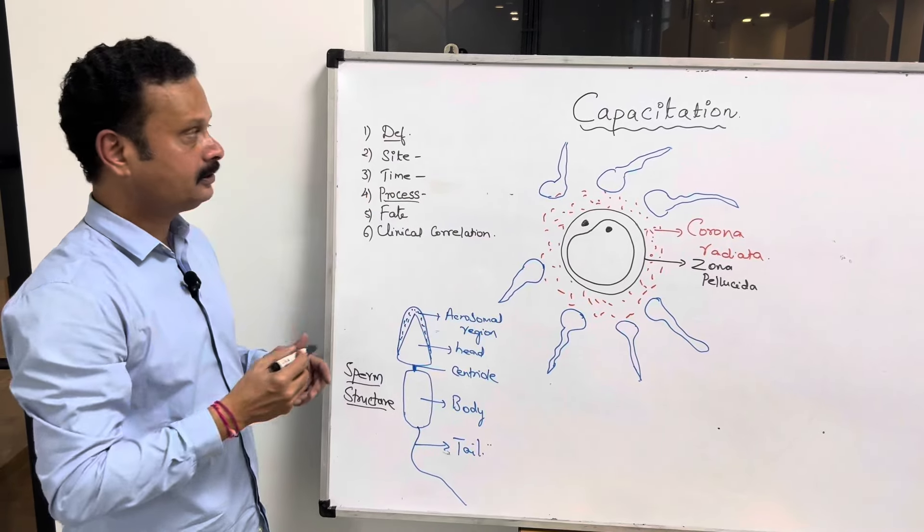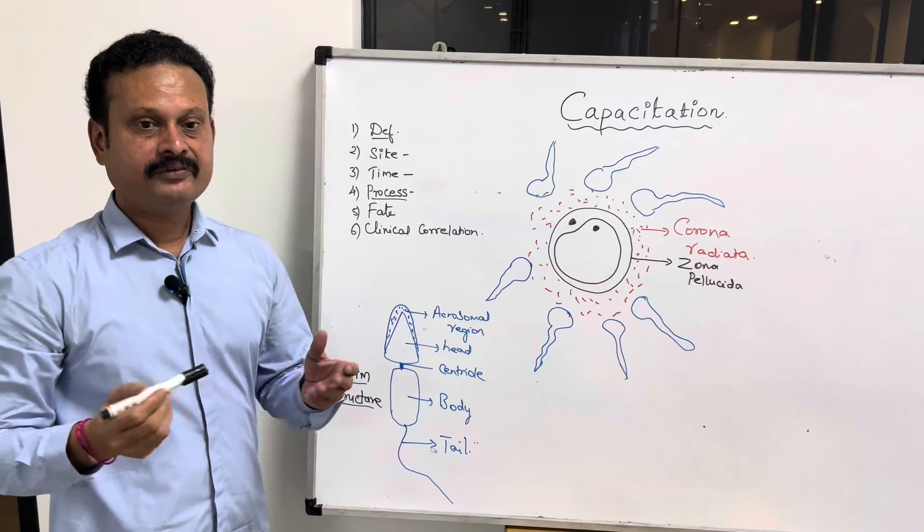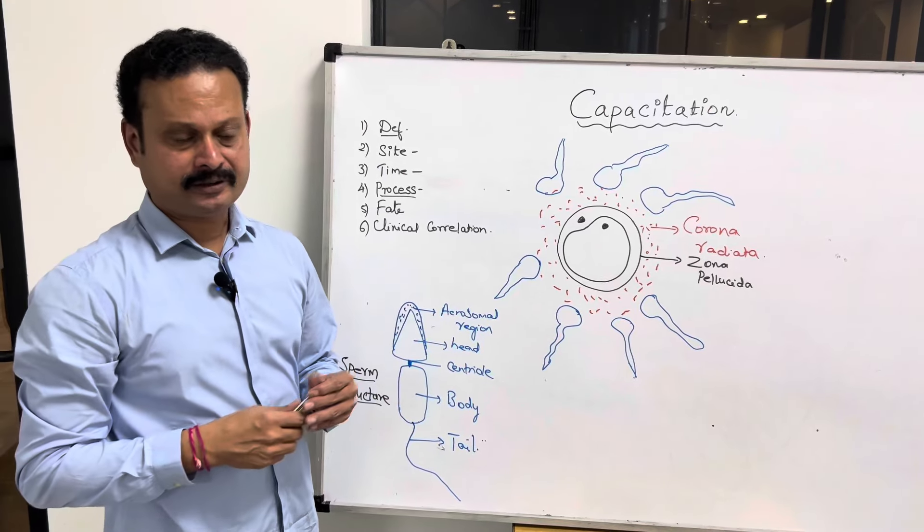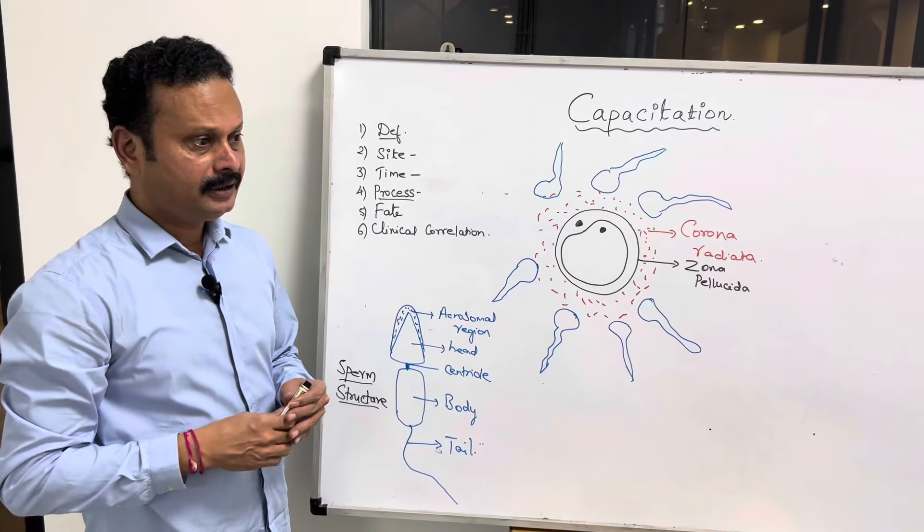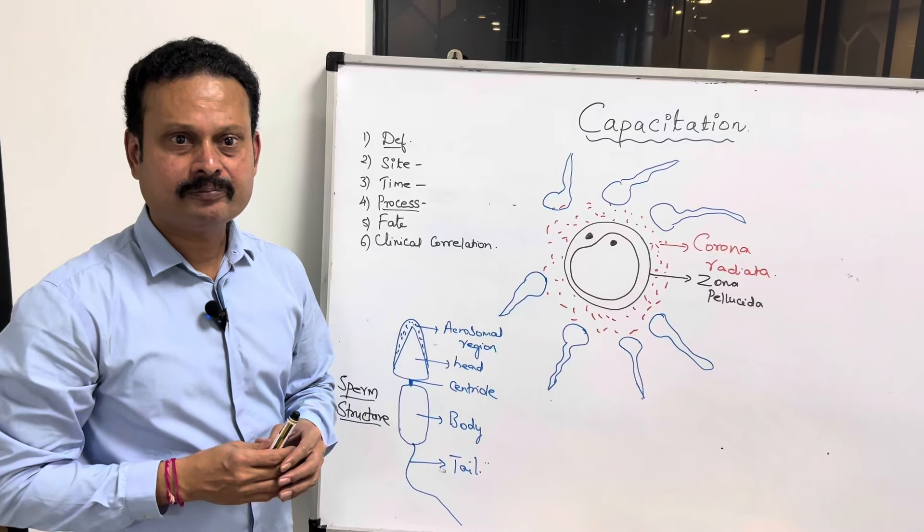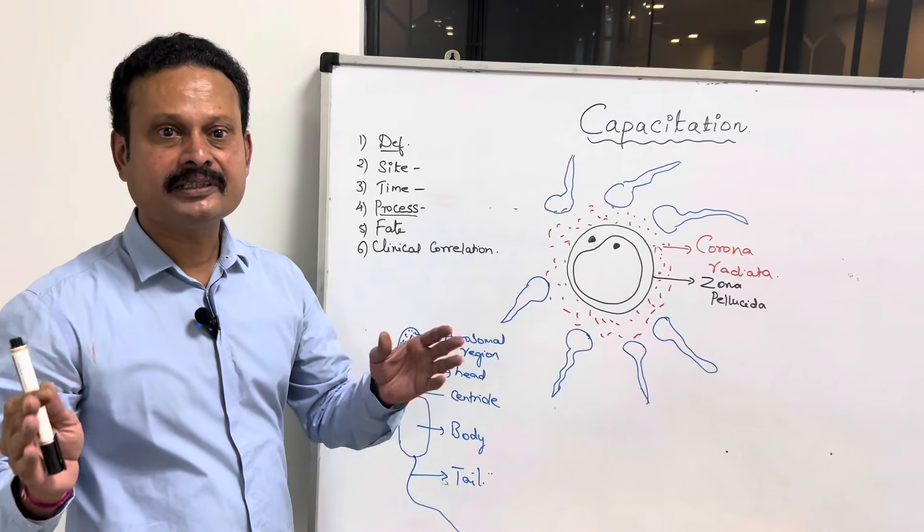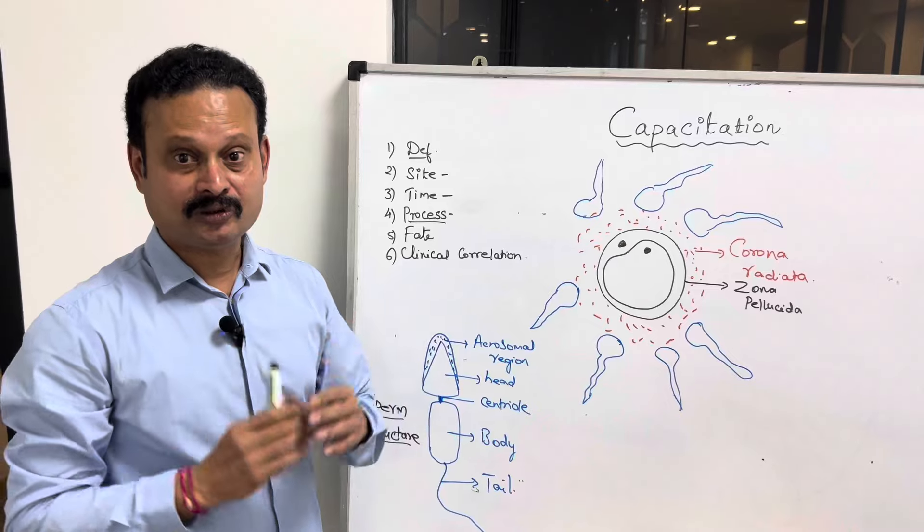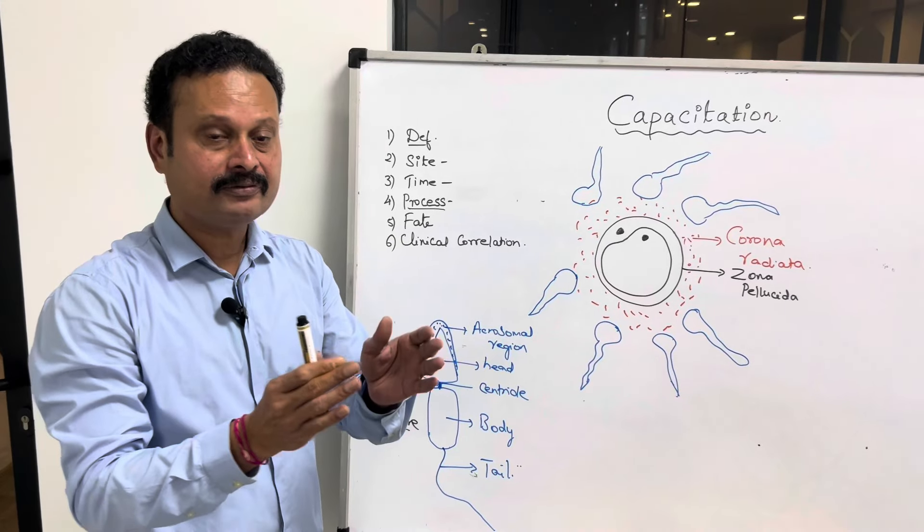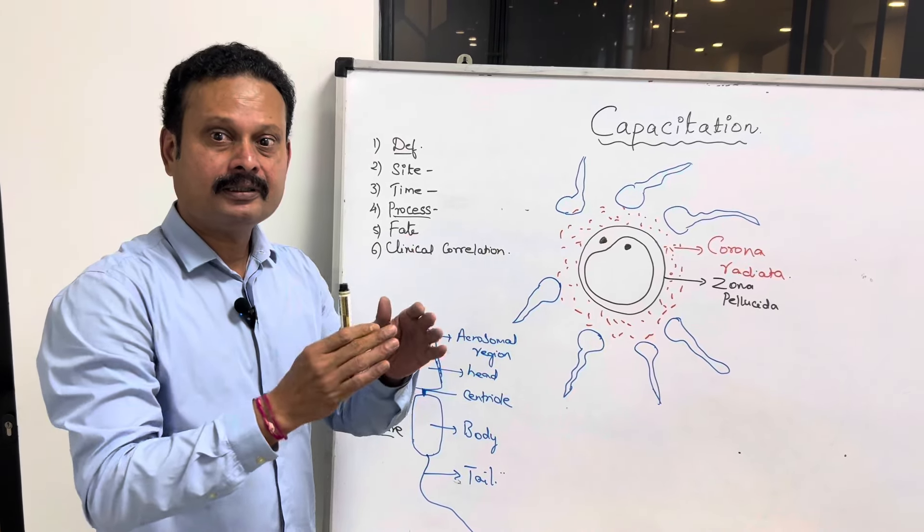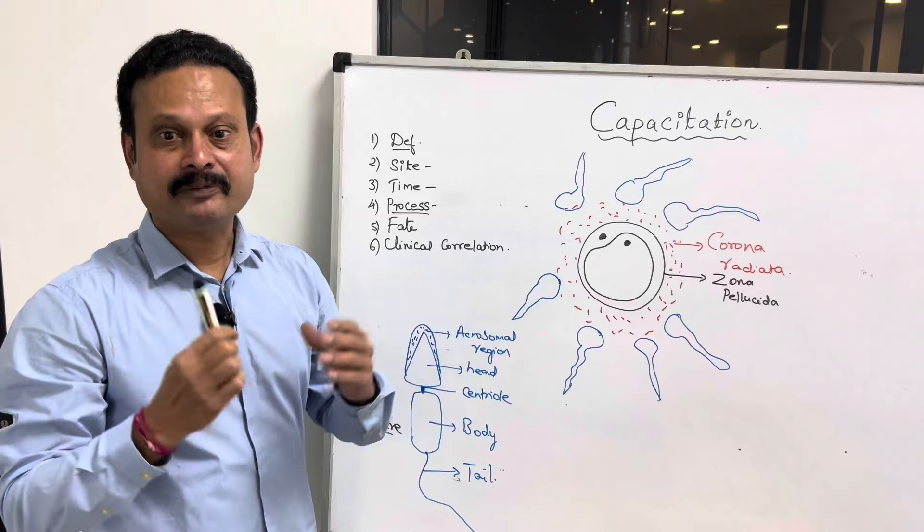Under these headings, first one is definition. What is capacitation? You can write it like this: it is the final step of maturation or conditioning of the spermatozoa.